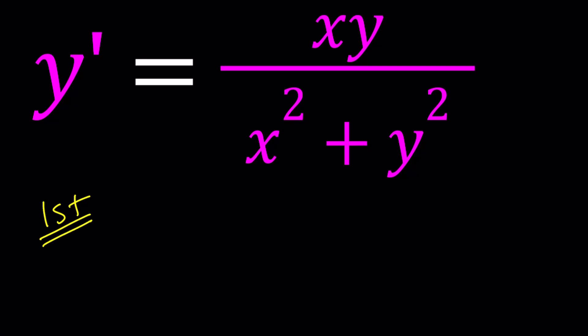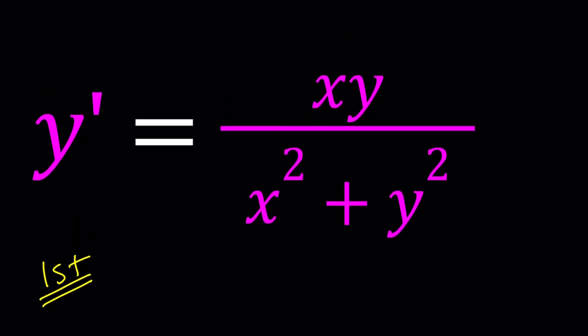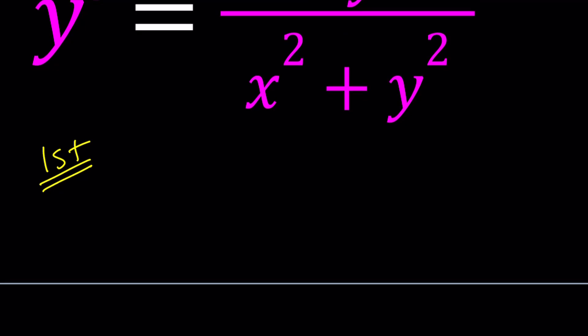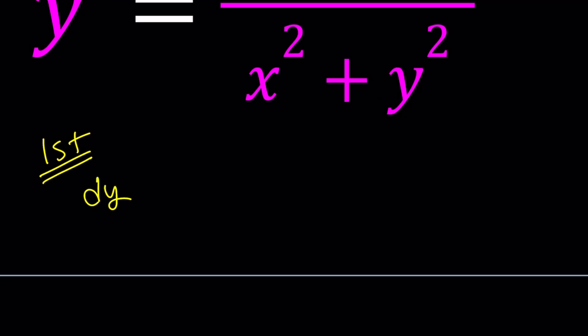So for my first method, first of all, I'm going to write y' as dy/dx. Take a look at this equation. Does this look separable to you? In other words, if I write this as dy/dx = xy/(x² + y²), can I put the y's on one side and x's on the other side so the y's don't contain x's and vice versa? It's not possible. At least as is, this is not a separable differential equation.